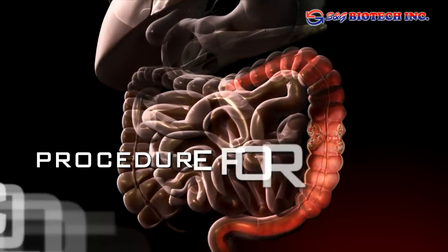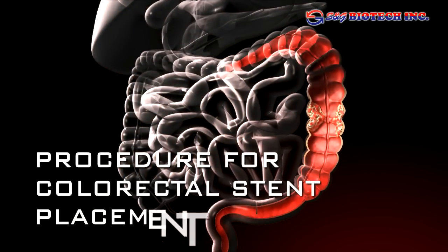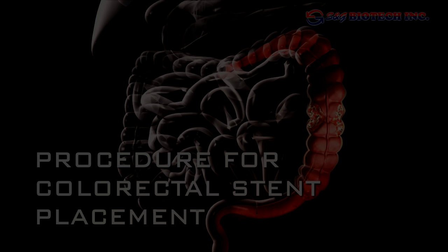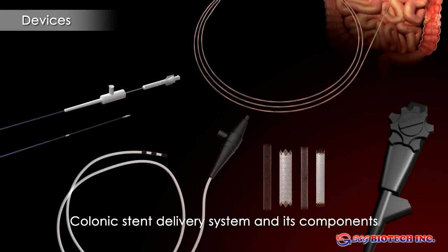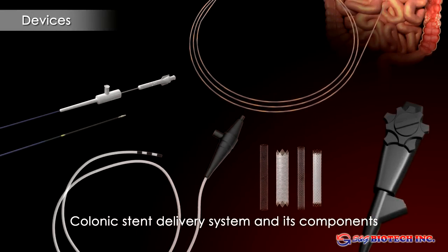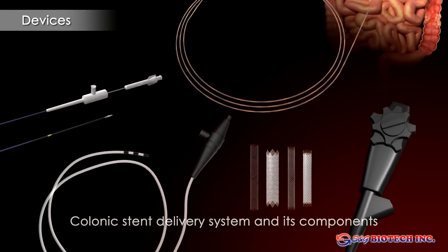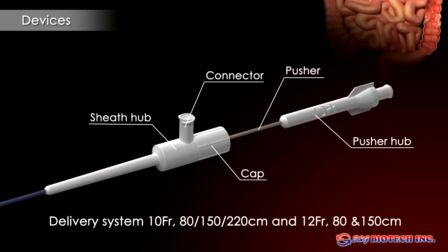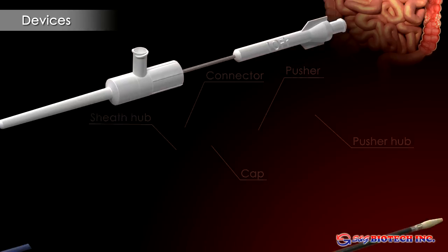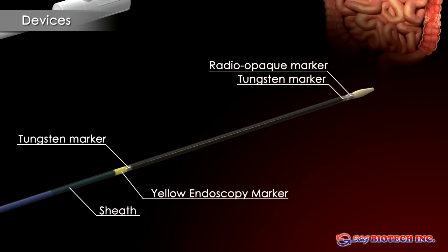Procedure for Colorectal Stent Placement. Aegis colonic stents may be used for the palliation of obstructing colorectal carcinoma, for decompression prior to surgery, or for focal strictures caused by other pelvic malignancy.